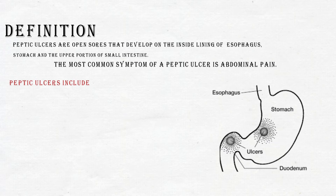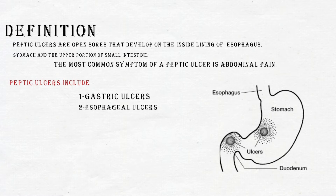The main symptom is abdominal pain. Peptic ulcers include gastric ulcers, esophageal ulcers, and duodenal ulcers.